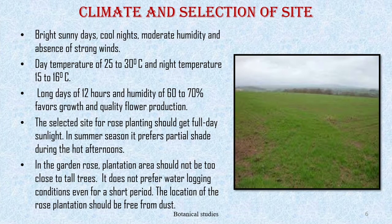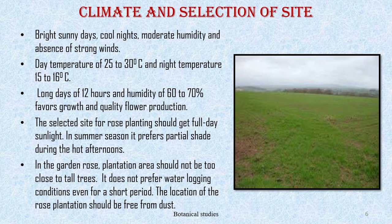Climate and selection of site: roses can be grown successfully under various climatic conditions. Quality flowers are obtained in areas with bright sunny days, cool nights, moderate humidity, and absence of strong winds. In general, it prefers a day temperature of 25 to 30 degrees Celsius and night temperature of 15 to 16 degrees Celsius. Long days of 12 hours and humidity of 60 to 70 percent favor growth and quality flower production.